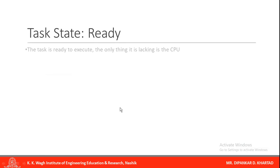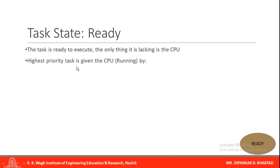The next state is the ready state — the task has everything it needs to run except the CPU. A higher priority task may be currently running; once that higher priority task completes, MuCos2 will run the next task in the ready state. The highest priority task is given the CPU by OS start, and a task returns to the ready state if it is preempted.